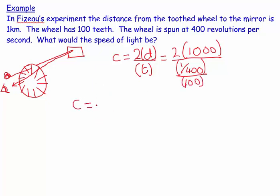Therefore, C is equal to two times the distance, which is a thousand, over one over four times ten to the four.